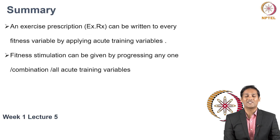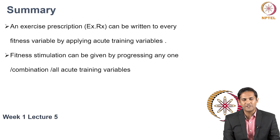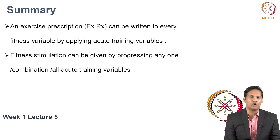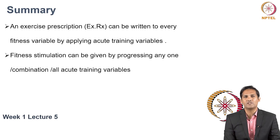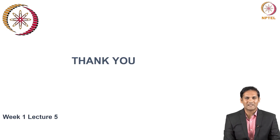To summarize, an exercise prescription can be written for every fitness variable by applying acute training variables. Fitness stimulation can be given by progressing any one, or a combination, of all acute training variables. If you want more challenging workouts, think about increasing frequency, intensity, or volume, or simply changing the type of stimulation. You will also be given an assignment to submit online within the given time period, which may be in the format of an MCQ or a case study.